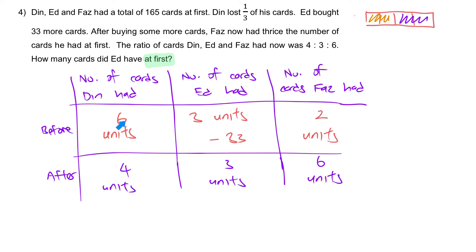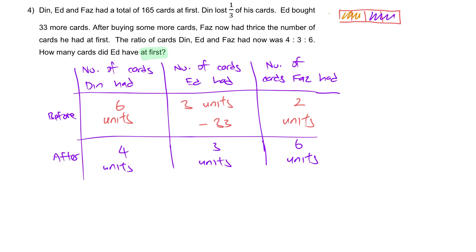Hence, at the beginning, the ratio is 6 is to 3 units minus 33 is to 2. First sentence, in total, they had 165 cards at first. This whole thing is equal to 165. So, what is the total? It's this plus this plus this. That will give you 11 units minus 33. So, 11 units minus 33 is equal to 165. What is 11 units?